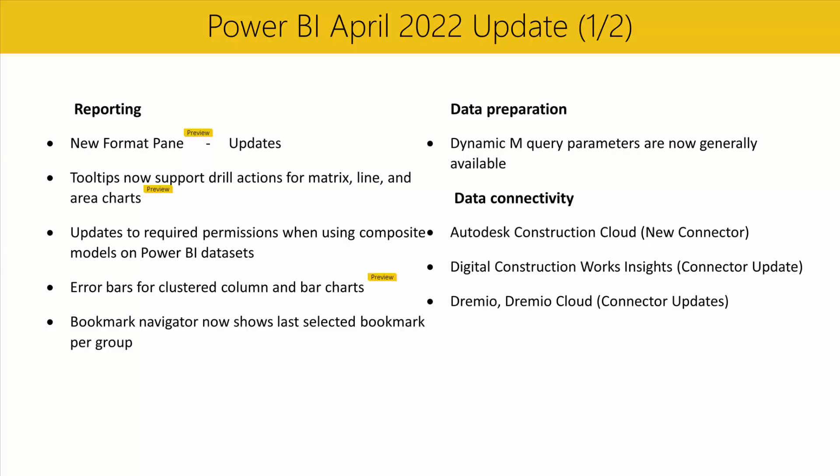First, we'd like to remind you that we plan to make the new format pane generally available in the May release next month, after which you will no longer be able to switch back to the old format pane. Please continue sending us your feedback on the monthly release blog post or by adding to the discussion via the Share Feedback link next to the Preview Feature checkbox in the Options menu. We've heard overwhelming feedback about the new format pane subcategories and the extra clicks for authors who are familiar with settings and where to find them.